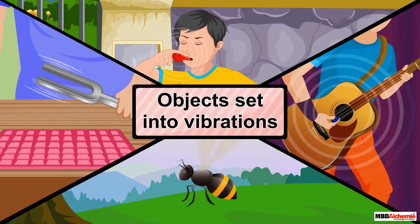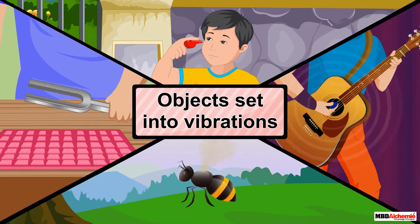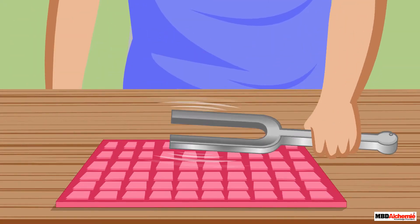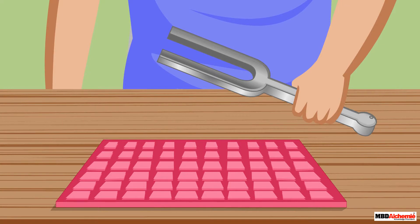actually setting the objects into vibrations. For example, we set the tuning fork into vibrations when we strike its prong on the rubber pad, and sound is produced.